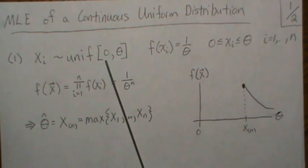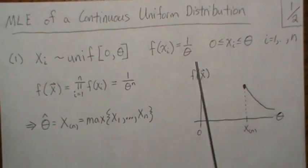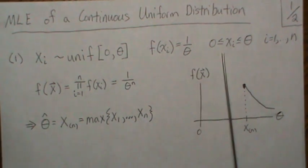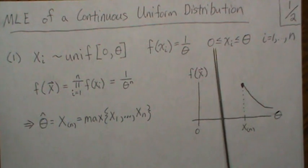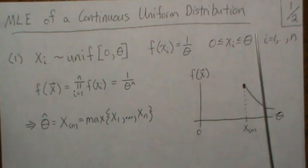The first one is a uniform from zero to theta, and so the density is 1 over theta. But notice the equal signs there, so Xi can equal theta and it can equal zero or anything in between.